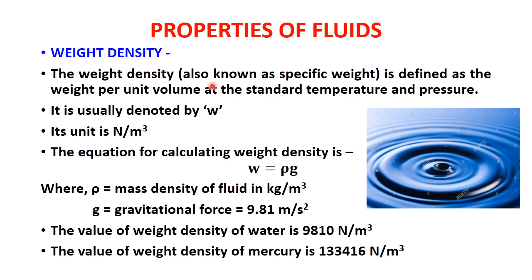Next is weight density. Weight density, also known as specific weight, is defined as the weight per unit volume at standard temperature and pressure. It is denoted by small w. When mass is multiplied by gravitational acceleration (9.81 m/s²) it becomes weight, so instead of kg we have Newton. Therefore the unit for weight density is Newton per meter cube.